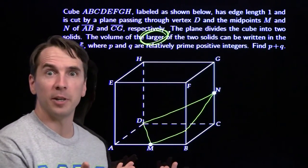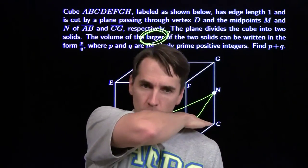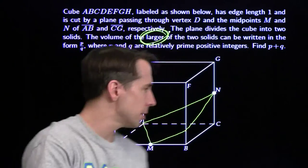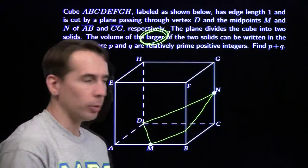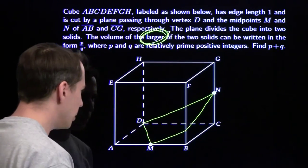This little piece down here might be a frustum. Now a frustum is what you get when you start with a pyramid and you lop the top of the pyramid off with a plane parallel to the base. Now there are all sorts of special formulas for finding the volume of a frustum, but I don't know those formulas.